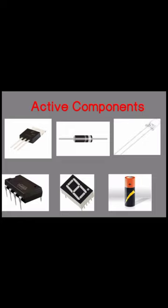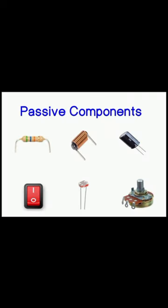Examples of active components are transistor, diode, LED, IC integrated circuit, seven segment display, battery, etc.